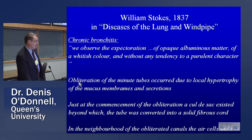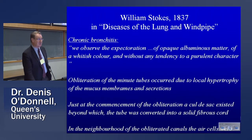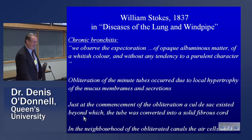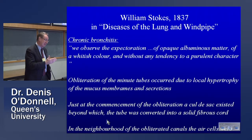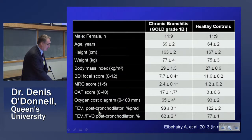In his gross pathology, Stokes mentions obliteration of the minute tubes occurring due to local hypertrophy of the mucous membranes and secretions. He said that just at the commencement of the obliteration, a cul-de-sac existed beyond which the tube was converted into a solid, fibrous cord — which is essentially what you're seeing with micro-CT. He also mentioned that in the neighborhood of these obliterated canals, the air cells are dilated. So these are remarkably early descriptions.